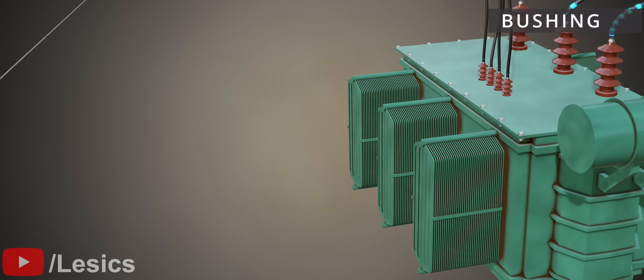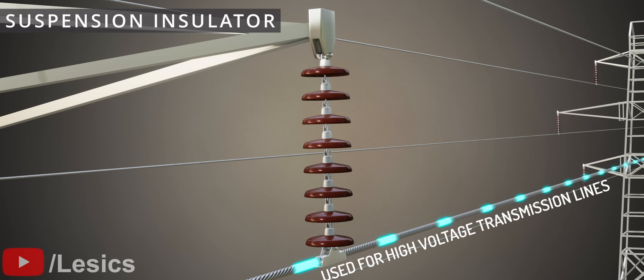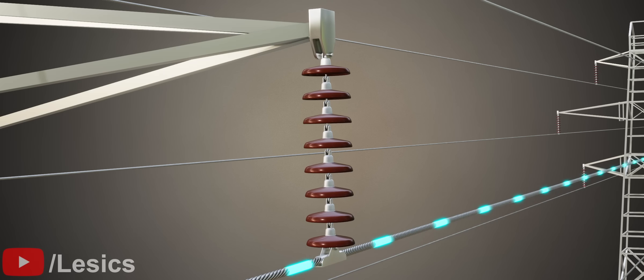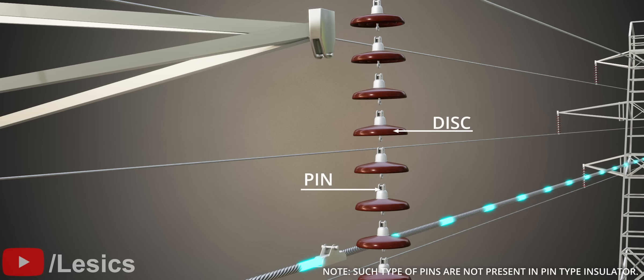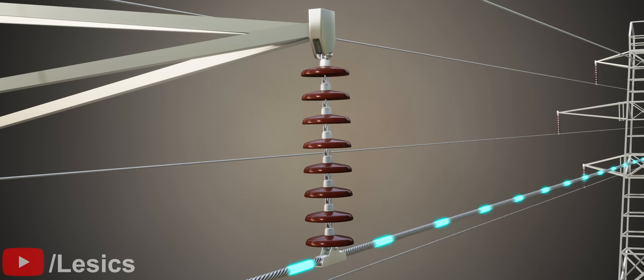Another popular type of the insulator is the suspension type. Here, the power line is suspended from the insulators. Suspension insulators have multiple disks connected with metallic pins. However, the presence of these pins causes a big electrical issue in this design.